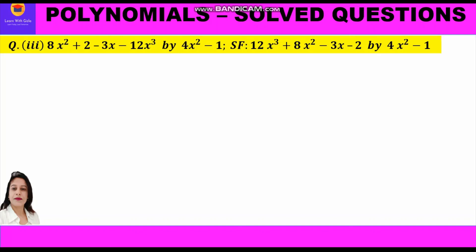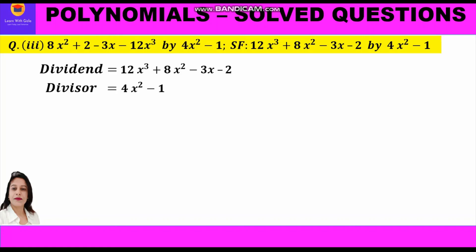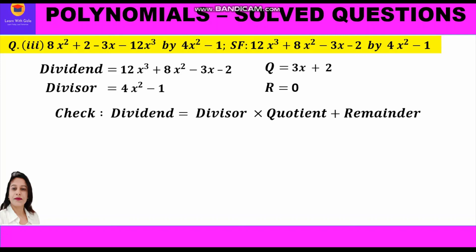Now let us check the answer using the division algorithm. We have the four elements: dividend, divisor, quotient, and remainder. We put these values into dividend equals divisor into quotient plus remainder: 12x³ plus 8x² minus 3x minus 2 equals 4x² minus 1 into 3x plus 2, plus 0.